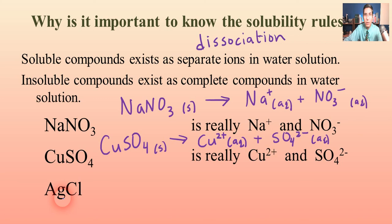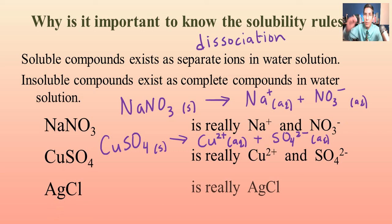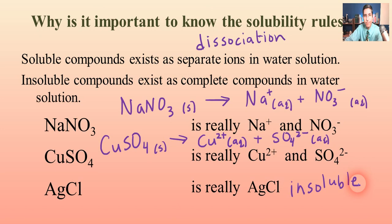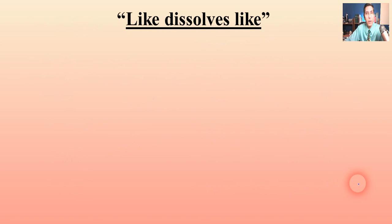What about AgCl, silver chloride — does that dissolve in water? It doesn't. Most chlorides are soluble, but silver chloride is one of the three exceptions: silver, lead, and mercury. If you try to dissolve it in water, it just sinks to the bottom of the beaker and won't break apart. It does not dissociate — it stays as AgCl. There is no appreciable dissociation reaction; if any dissolves, it's a very, very tiny amount.